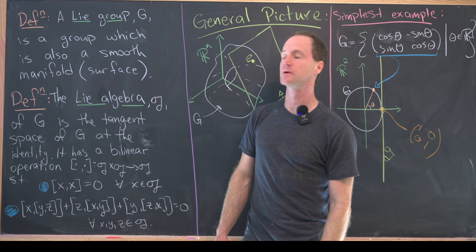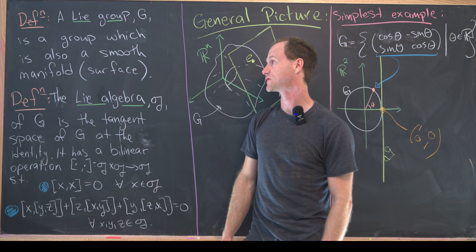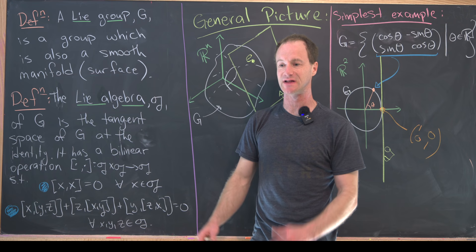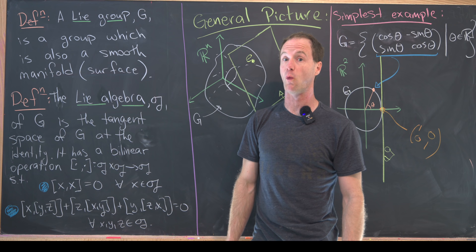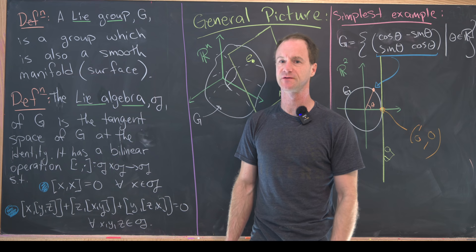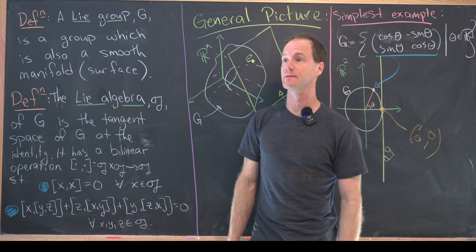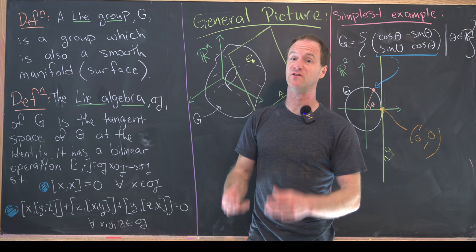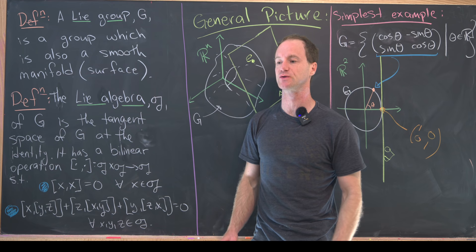A Lie group G is a group which is also a smooth manifold. You can visualize that as just some sort of smooth surface. A nice smooth one-dimensional surface would be like a circle. A sphere would be an example of a two-dimensional surface, and so would the plane. A torus would be another two-dimensional surface — notice we're talking about the surface, not the inside. A three-dimensional surface would be something like a ball, the filled-in sphere. More interesting three-dimensional surfaces are hard to visualize because they need to be embedded in higher-dimensional space.